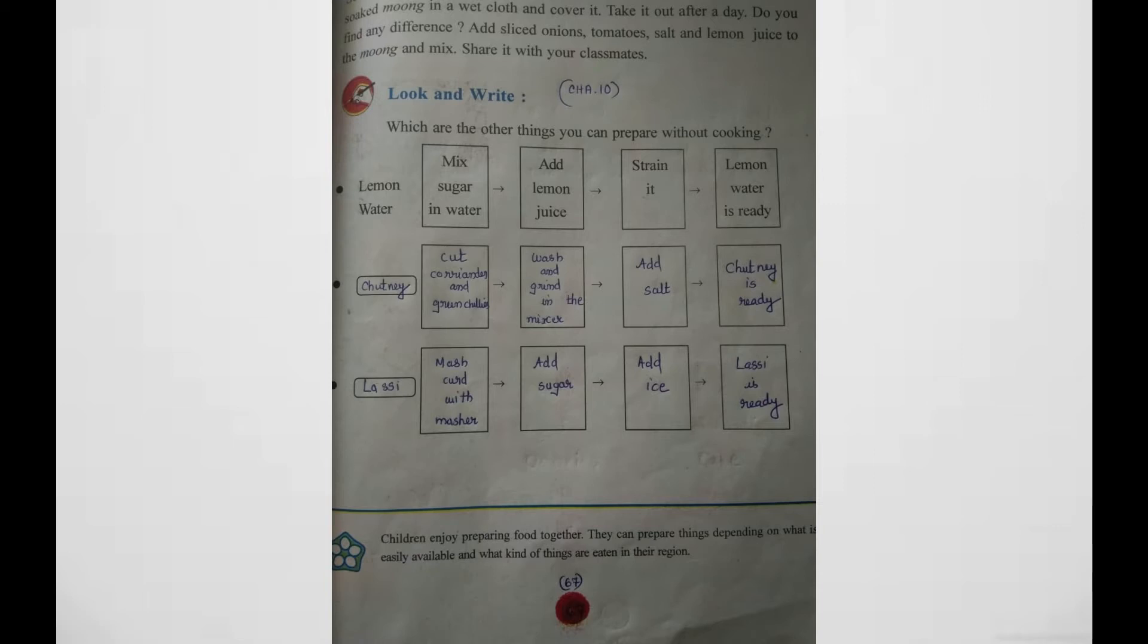Here are the things you can prepare without cooking. First, lemon water. How to make it: mix sugar in water, add lemon juice, strain it. Lemon water is ready.